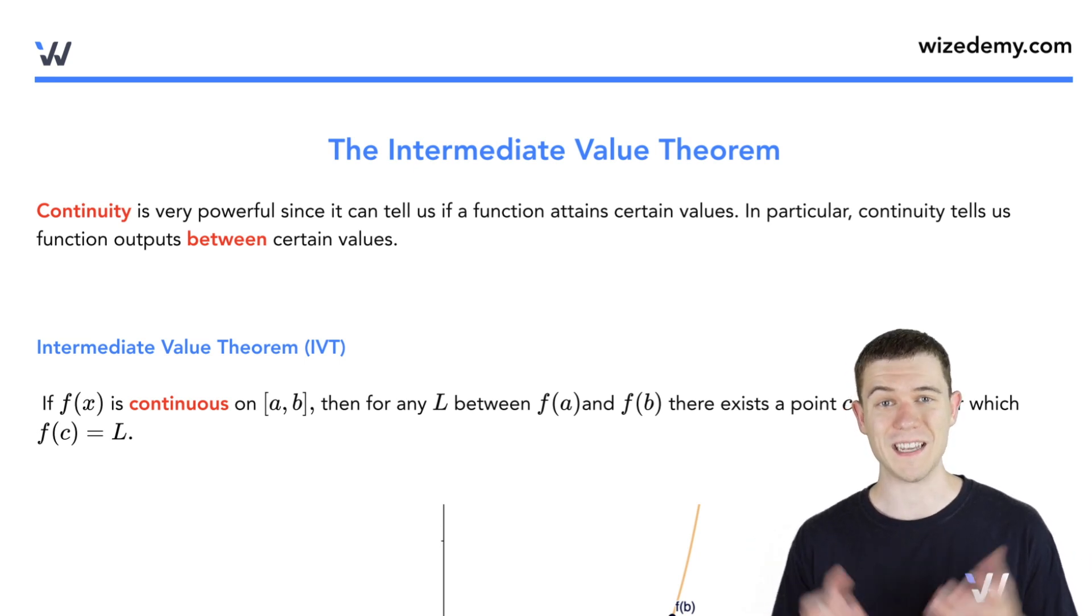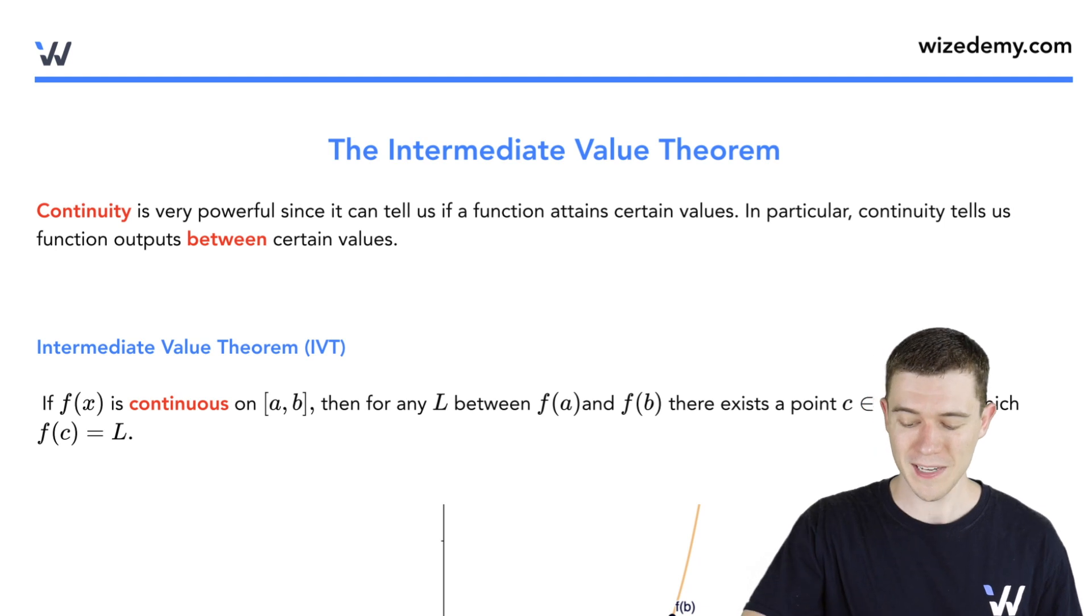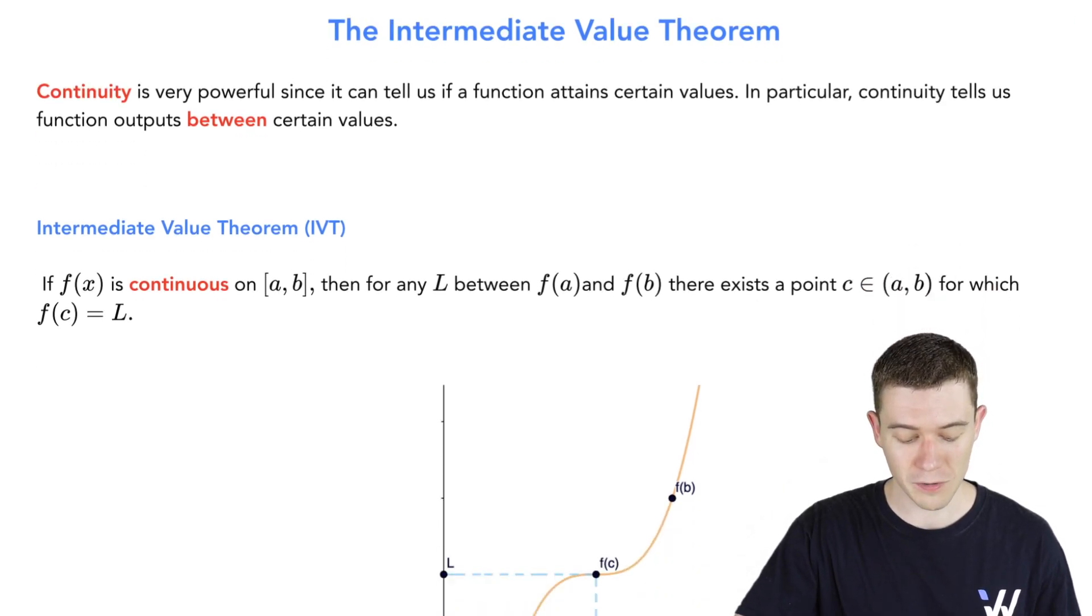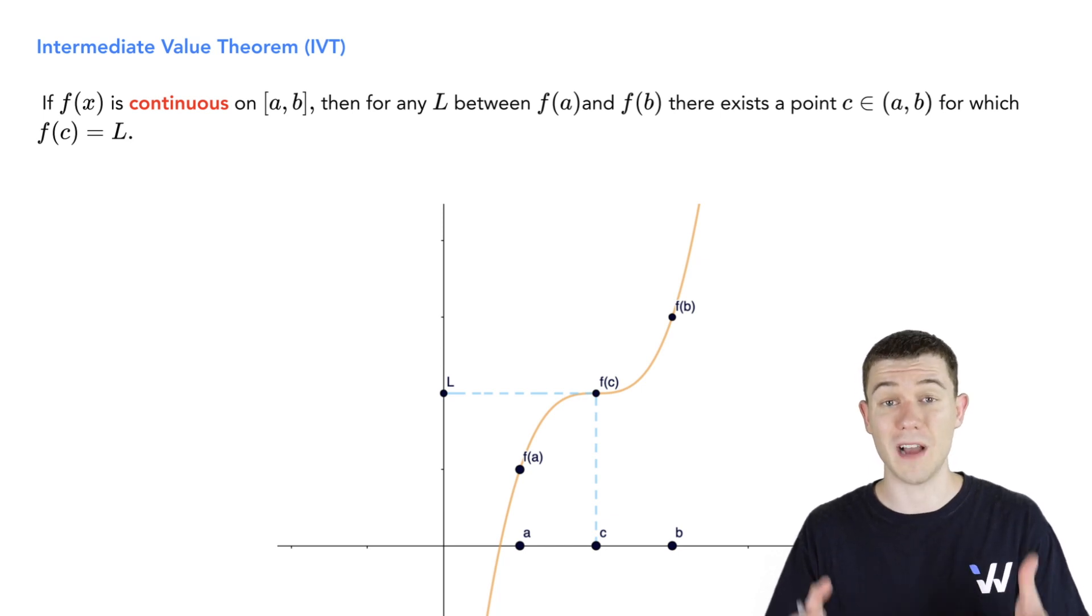Continuity tells us a lot of things. In particular, it gives us intermediate values. This is the intermediate value theorem, and as you might guess, it tells us about values in between other ones.